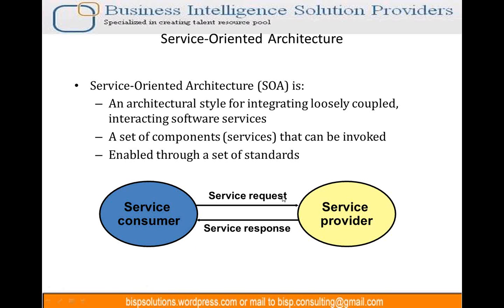Like in our case, we send a zip code and get the weather of that place. Another example can be Google Maps. Our website these days gives you Google Maps. Nobody keeps the database of the whole of Google at its end. What Google does is it has exposed its APIs as services so that you can use them in your system, your website, and show places or addresses.